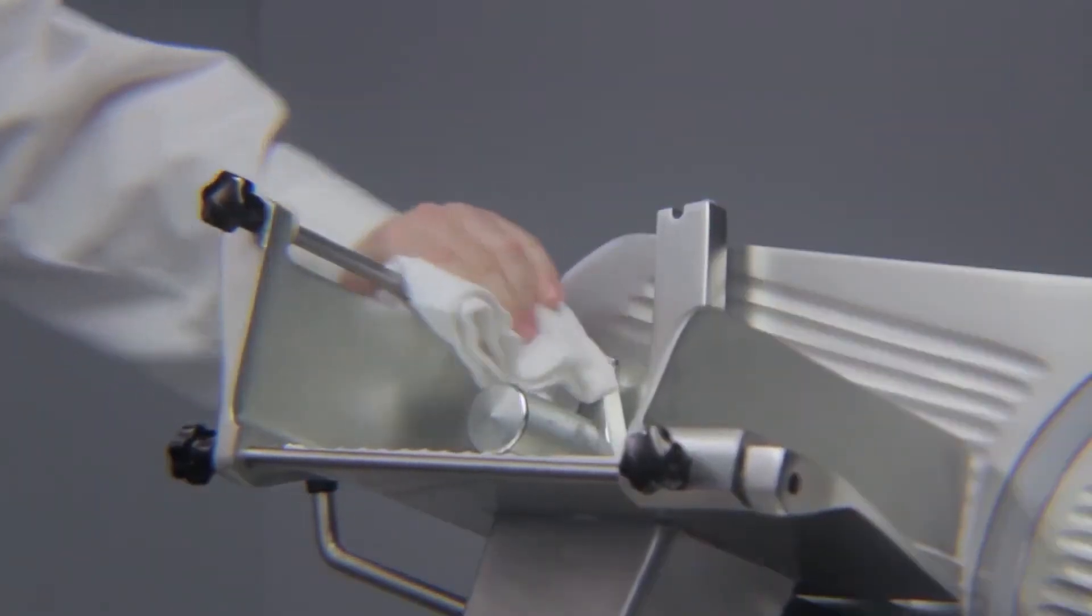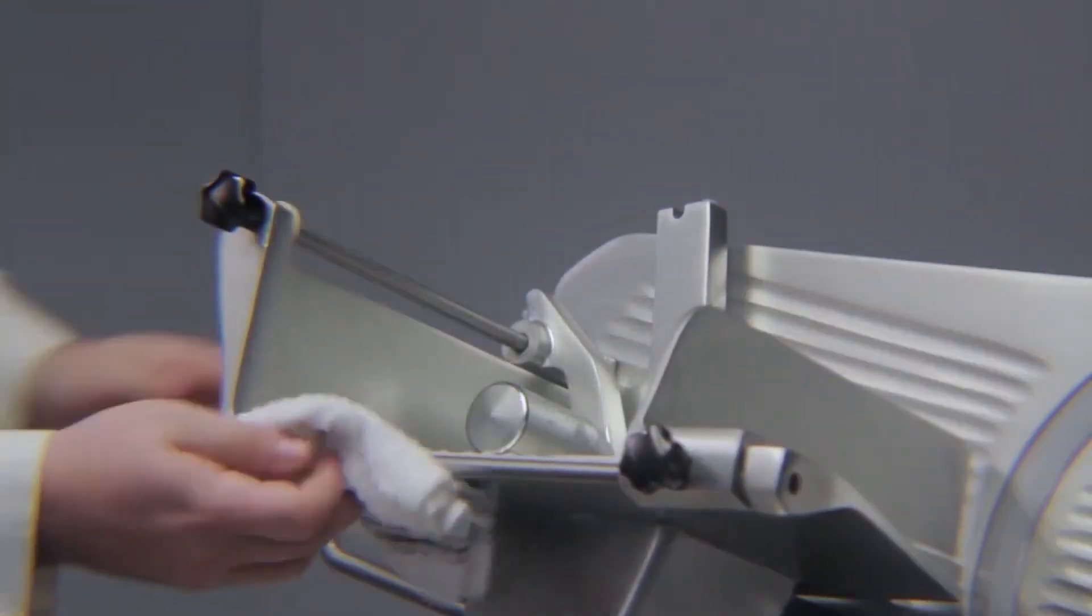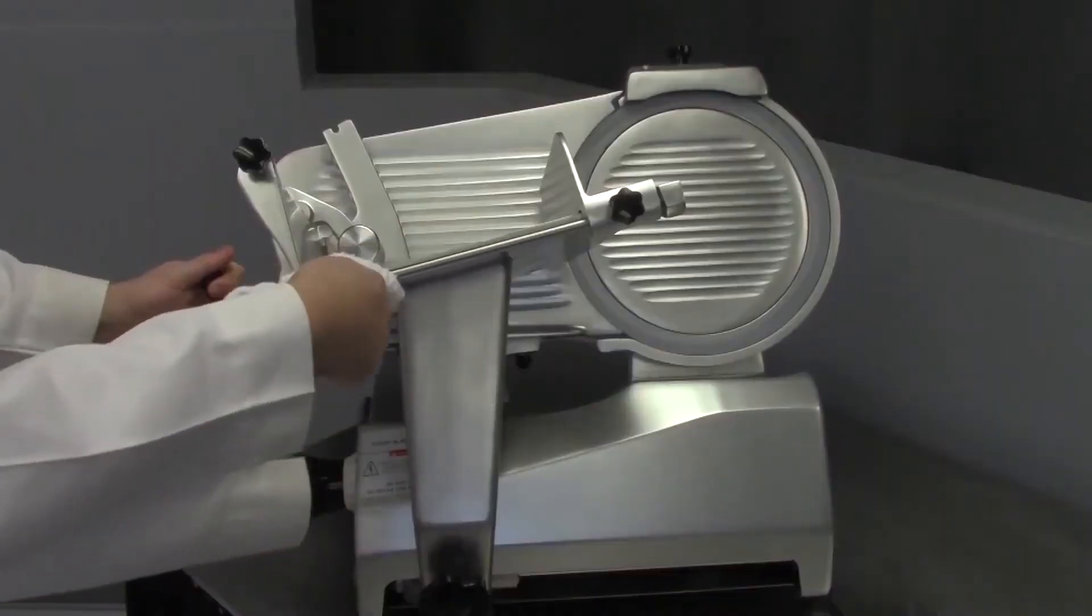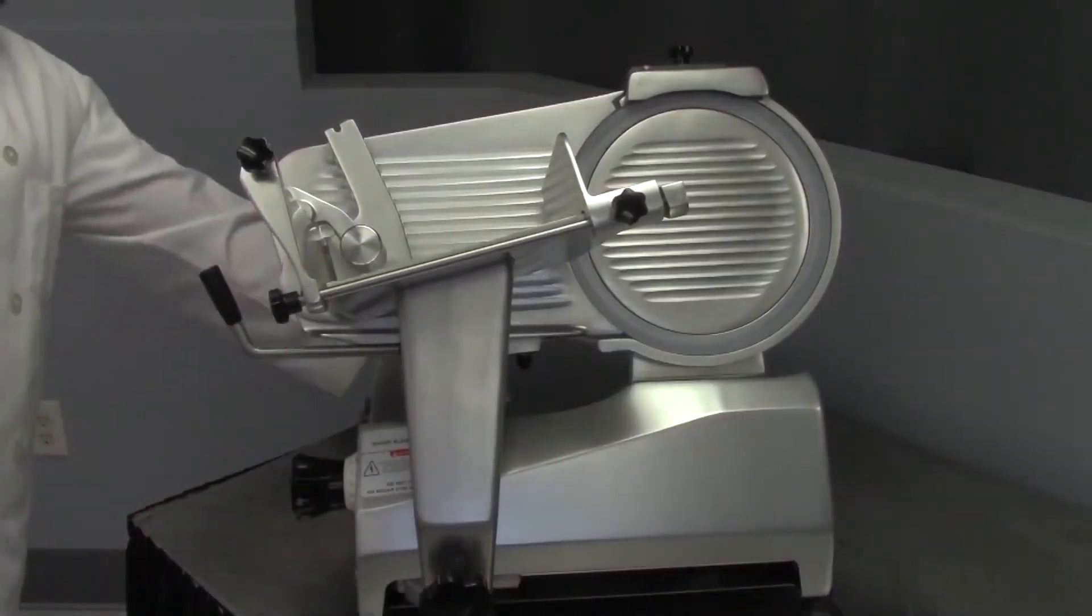First, wipe the carriage slide bars with a clean dry cloth to remove any residue. Then, apply a few drops of mineral oil to the feed grip rod.